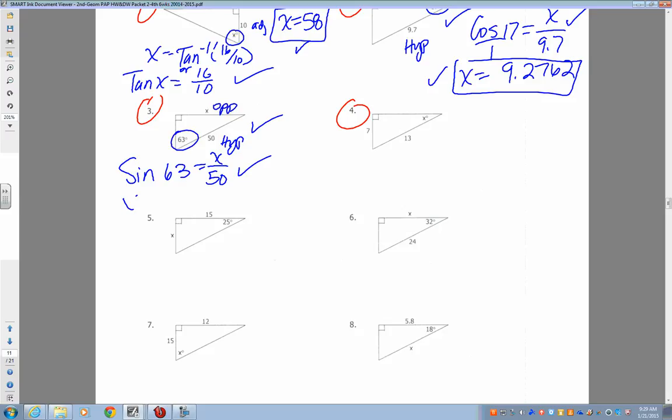To solve it, since x is on top again, you're going to have to do 50 times sine of 63. So x equals—I need to have my key because you have to round to the nearest four decimal places. Yeah. 44.5503.